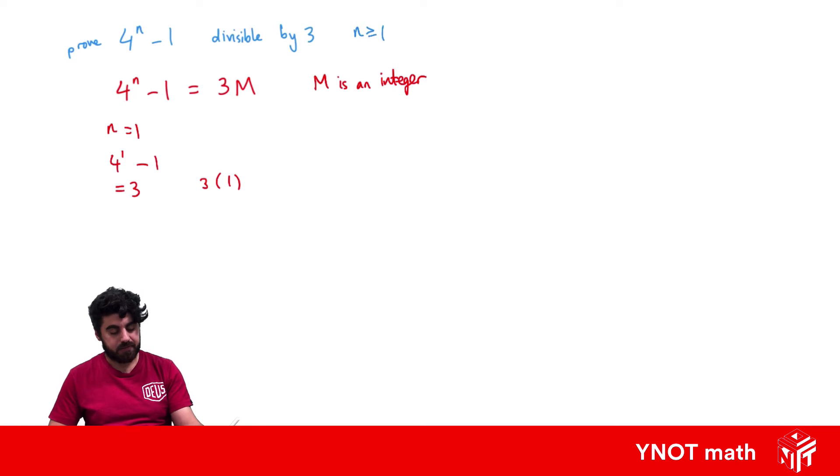Now the next step is to assume that it's true for n equals k. So we're going to have 4 to the k minus 1 equals 3 times some other integer. Let's call it q.